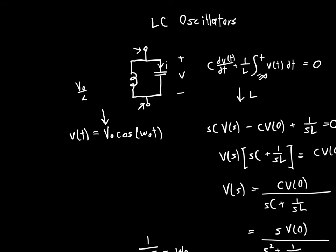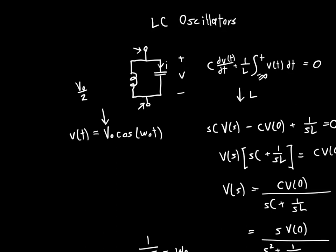This circuit can't oscillate without you putting energy into it first, and that energy can either be in the form of a voltage across the capacitor or current through the inductor—they're equivalent. So we've analyzed the simple LC oscillator, but how do we actually make one?